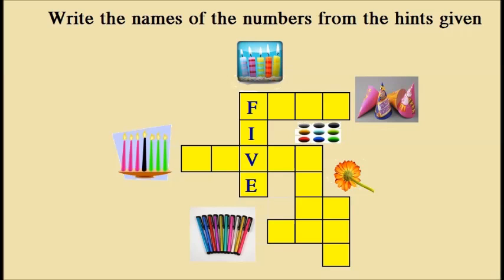The number of candles are 5. Now count the number of ice creams. 4.